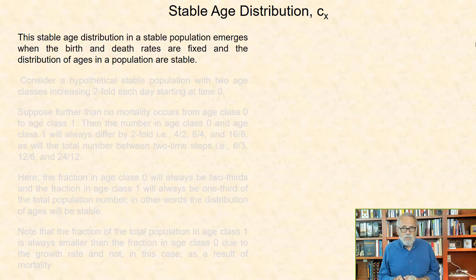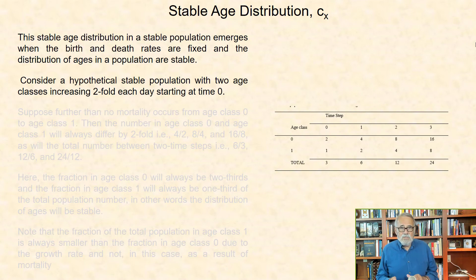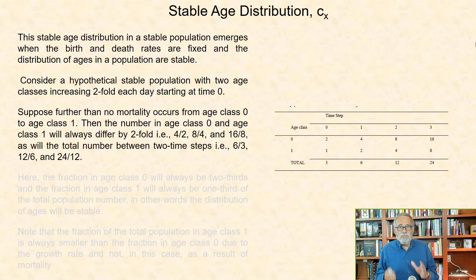Stable age distribution. The stable age distribution in a stable population emerges when the birth and death rates are fixed, and the distribution of ages in a population are stable. Consider a hypothetical stable population with two age classes increasing twofold each day starting at time 0. Suppose further that no mortality occurs from age class 0 to age class 1. Then the number in age class 0 and age class 1 will always differ by twofold. That is, 4 divided by 2, 8 divided by 4, and 16 divided by 8, as will the total number between two time steps. That is, 6 divided by 3, 12 divided by 6, and 24 divided by 12.